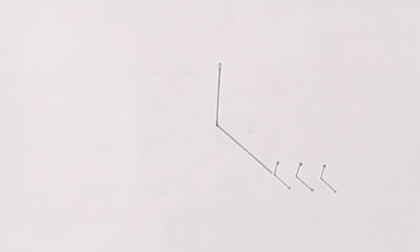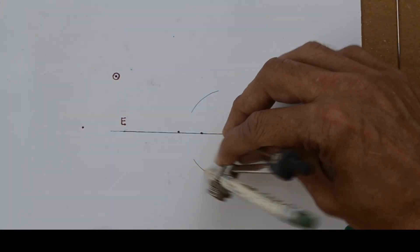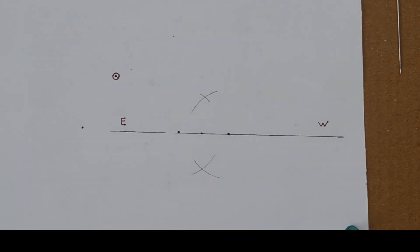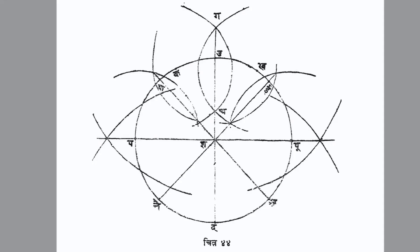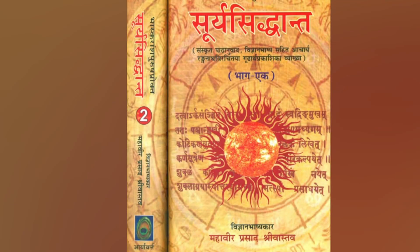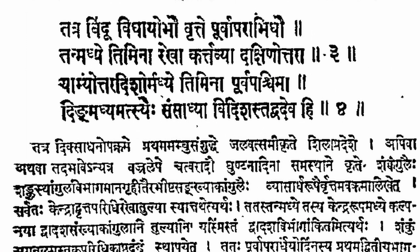In an earlier video, we learnt a quick way to find directions with the help of a needle and some pins. Let us look at another method as per the ancient book Surya Siddhanta. In the third chapter named Tripaksha Adhikar, the first 4 shlokas describe how to find directions.